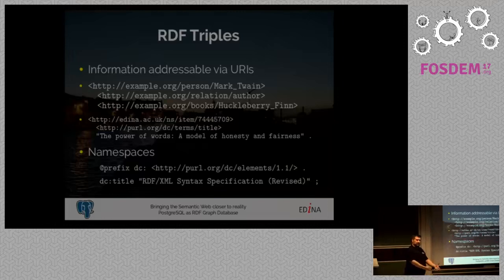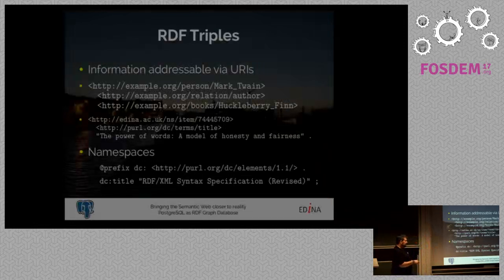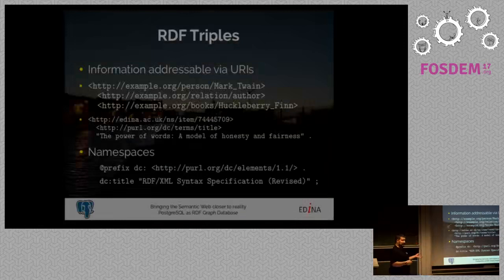We have namespaces that allow us to make this whole thing a bit shorter. We can bind namespaces — for example, DC elements, which are all the things in Dublin Core that can be encoded in RDF — and bind them to the prefix DC, so we can just say 'DC title this' instead of writing the whole URL for everything.